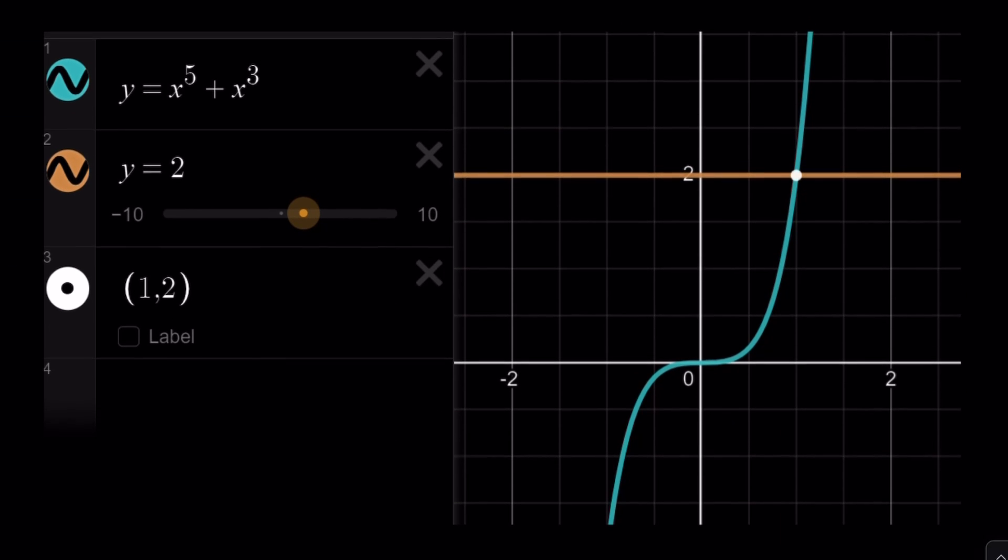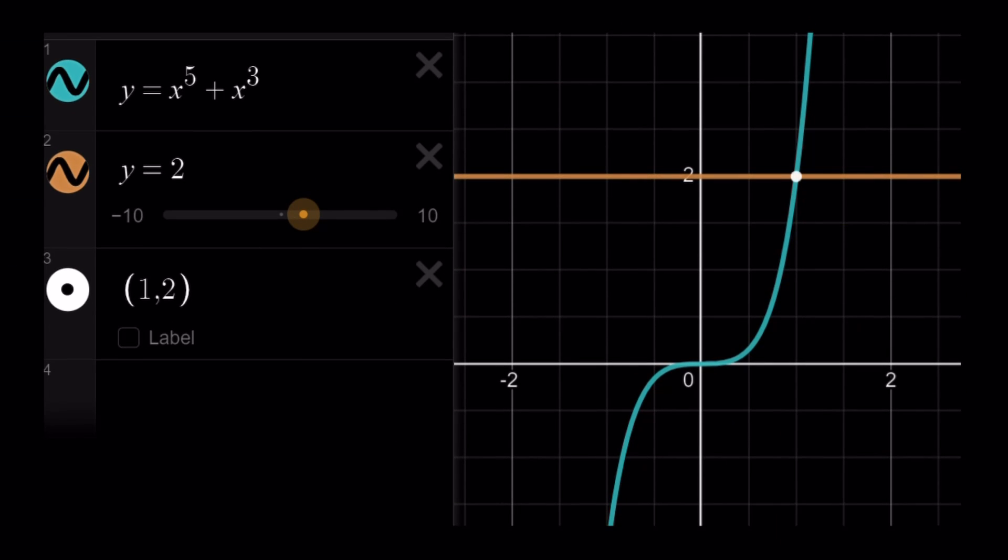Let's take a look at the graph real quick. The graph of x^5 + x^3, as you can see, intersects the horizontal line y = 2 at a single point at x = 1, and it changes concavity at 0 like we said before. It's always increasing.